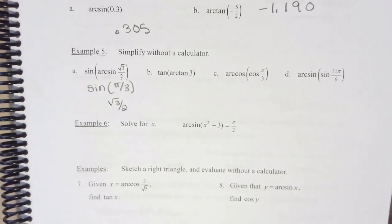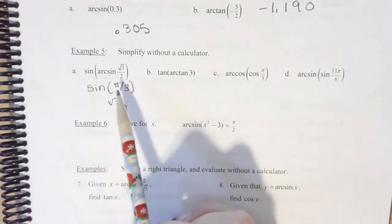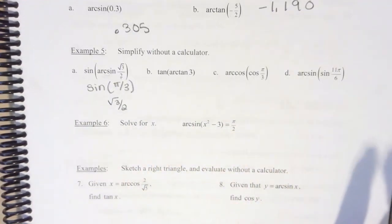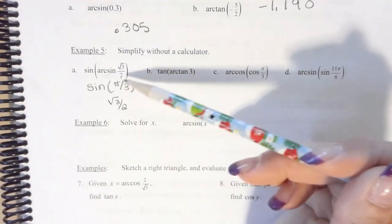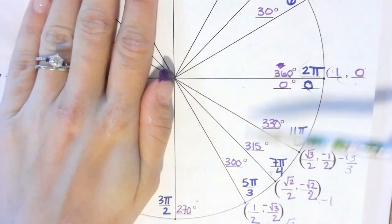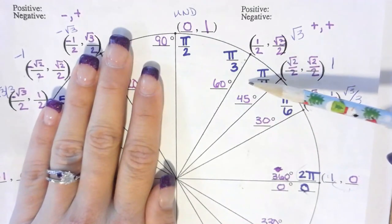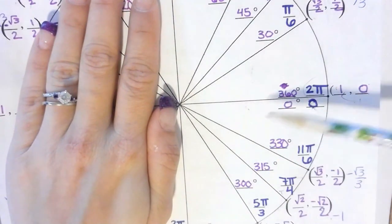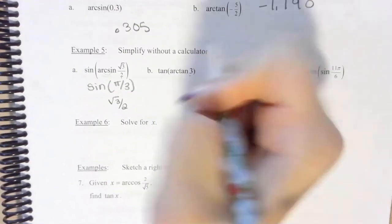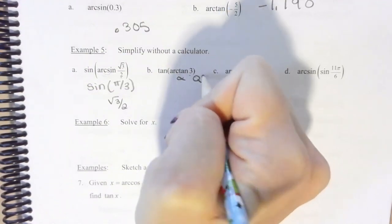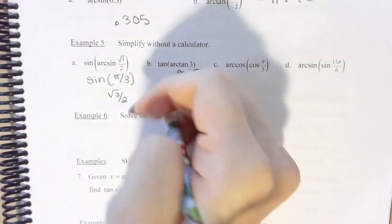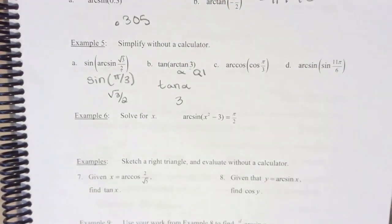For tangent of arc tangent of 3: since this is positive, it is in the first quadrant, and in the first quadrant sine and cosine come out the same. Since arc tangent of 3 is some angle in quadrant one, tangent of that angle is the same value — 3. This will happen for cosine the same way.